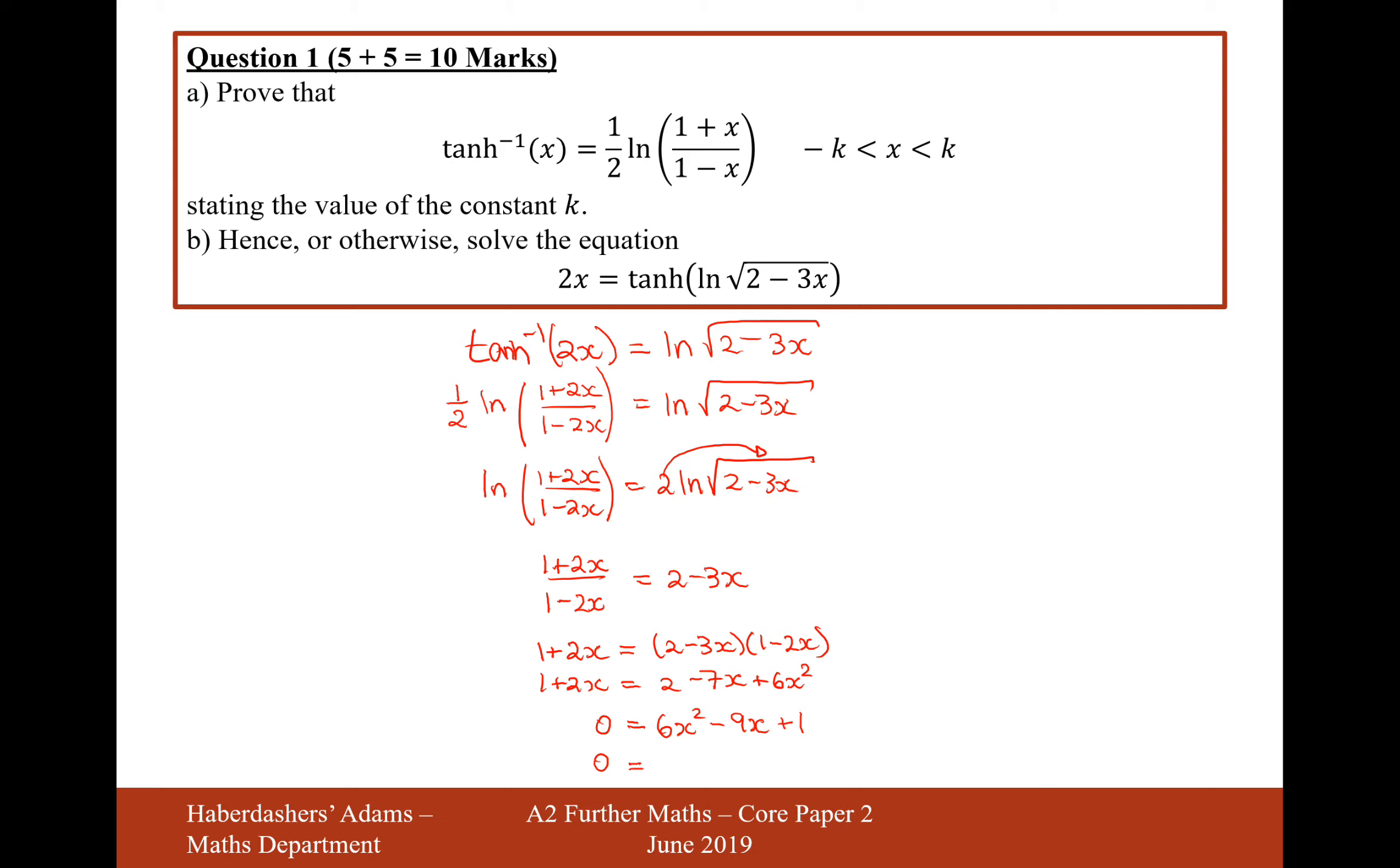And that will give us, not a very nice answer here. It will give us x equals 9 plus root 57 over 12. Let's just make sure that follows the set of rules from above. That's 1.379, so is this allowed? Because x is only allowed to be in between minus 1 to 1. I don't think that's going to be allowed.